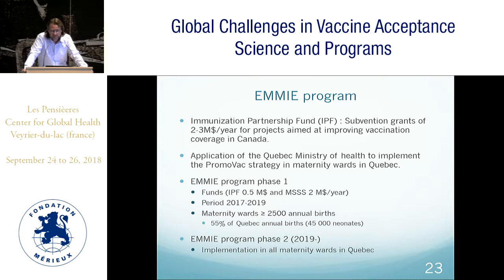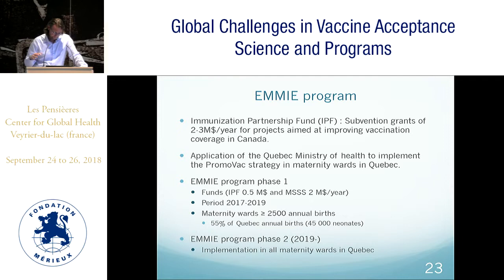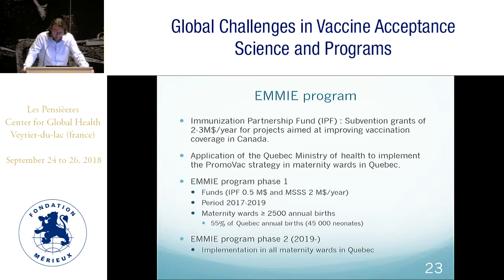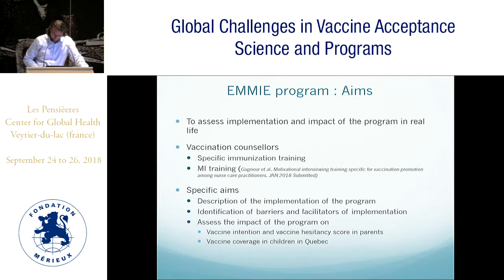We then moved to the EMI program, made possible through the partnership of the Canadian Public Health Agency and the Immunization Partnership Fund, which provides grants of 2–3 million dollars per year in Canada to support projects aimed at improving vaccination coverage. We applied with the Quebec Ministry of Health to implement the Promovac Strategy in maternity wards in Quebec. The first phase of the program was funded by the IPF and the Ministry of Health, started last year, and aims to implement the Promovac Strategy in all maternity wards with more than 2,500 annual births — representing more than half of Quebec births, nearly 50,000 births.